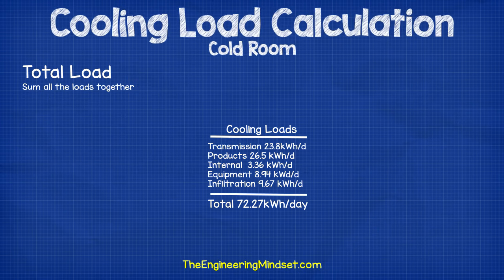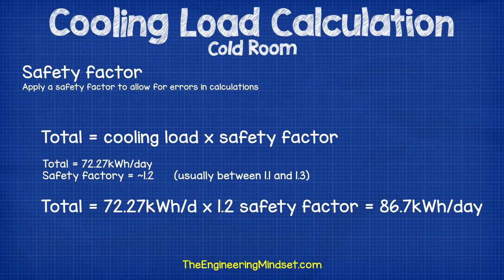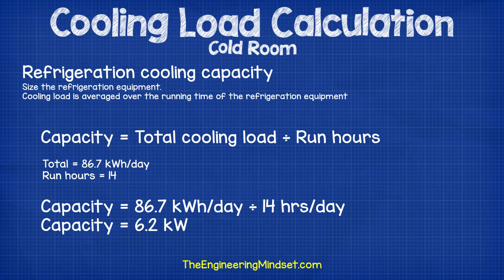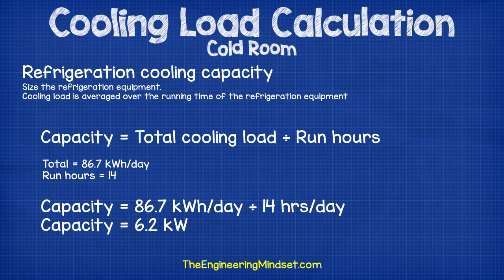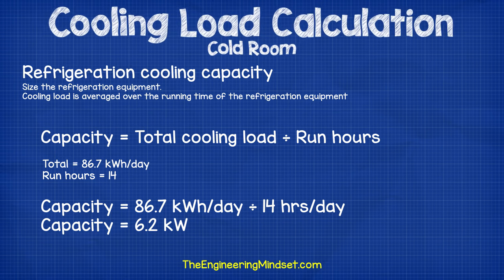Now we sum up all the calculations to get a total cooling load of 72.27 kilowatt hours per day. We then apply a safety factor — typically 10 to 30 percent — to account for errors and variations from design. I've gone with 20 percent, multiplying by a safety factor of 1.2 to give a total cooling load of 86.7 kilowatt hours per day. To size the refrigeration unit, we divide the total daily cooling load by the estimated run time of 14 hours per day, meaning the refrigeration unit needs a capacity of 6.2 kilowatts to sufficiently meet our cooling load.